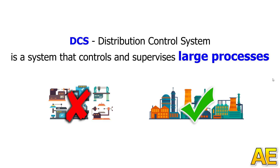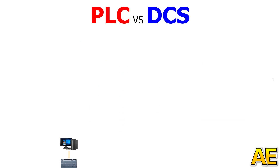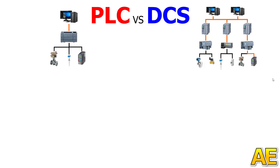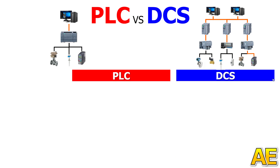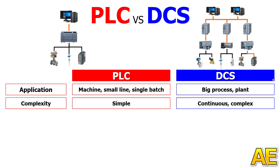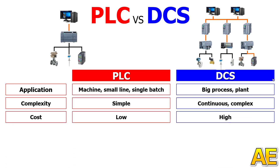Now we come to a detailed comparison between PLC and DCS. The first difference is application — the PLC is for the machine, small line, or single pack; DCS is for the big process or plant. The second difference is complexity — the PLC is simple, but the DCS is continuous and complex, with more than two controllers, thousands of IOs, and hundreds of field devices.